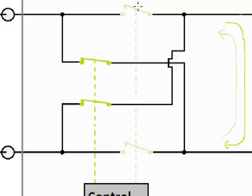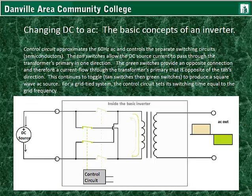The TAN switches allow the DC source current to pass through the transformer's primary in one direction. Looking at the TAN switch: when it's closed and the greens are open, they're a solid electrical path, and the greens mean no path.